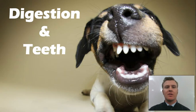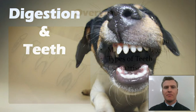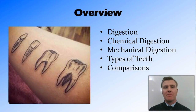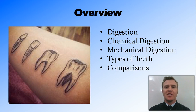In this video we're going to look at digestion and the role of the teeth in digestion. We're first going to look at digestion, then the two different types of digestion — chemical digestion and mechanical digestion — the different types of teeth involved in mechanical digestion, and some comparison between some different animals.